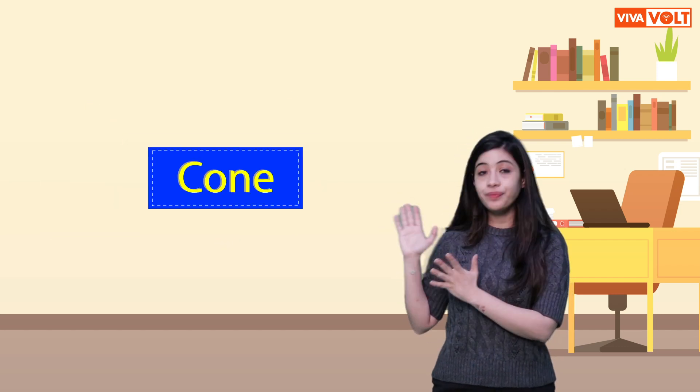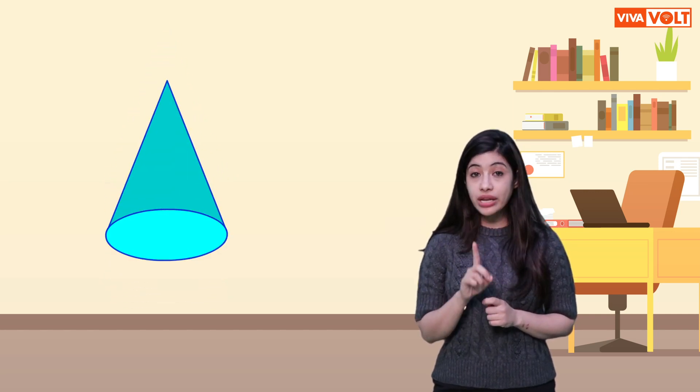Cone. A cone has one flat face and one curved face. It has one edge. It has one corner called vertex.